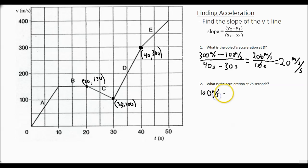So 100 meters per second minus our y2, 150 meters per second divided by x2, which is 30 seconds minus 20 seconds.